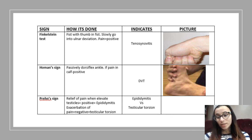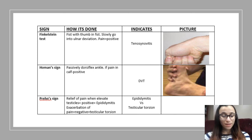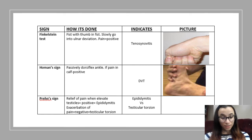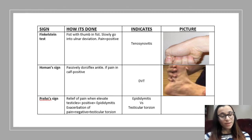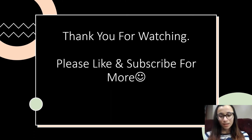Prehn's sign is a way to differentiate between epididymitis and testicular torsion. If, when you elevate the testes, the pain goes away, then it's usually epididymitis. If it makes the pain worse, then it's testicular torsion. A way to remember that is Prehn's — because that's not something you want your friend to perform on you. Thank you so much for watching — please like and subscribe for more, and stay tuned. Bye.